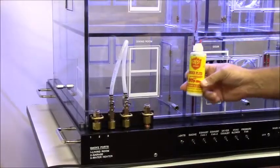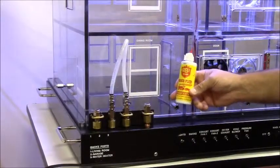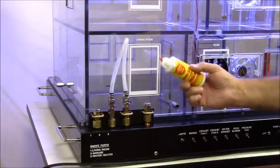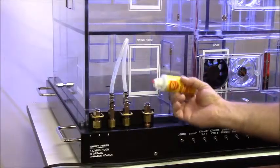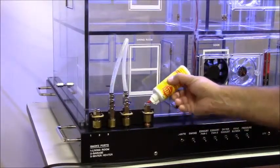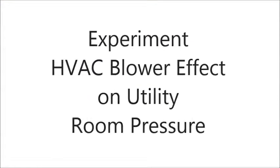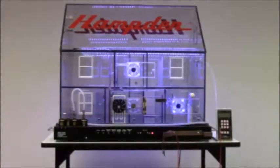To refill the Hamden Model H Heat 2 Air Distribution System Trainer smoke generator, we add a few drops to the smoke generation port. For this experiment, we will be simulating the HVAC blower effect on utility room pressure of a home with a forced air duct system and a single zone return air.